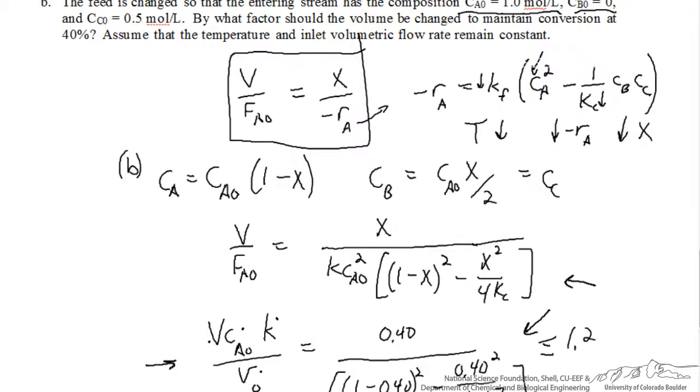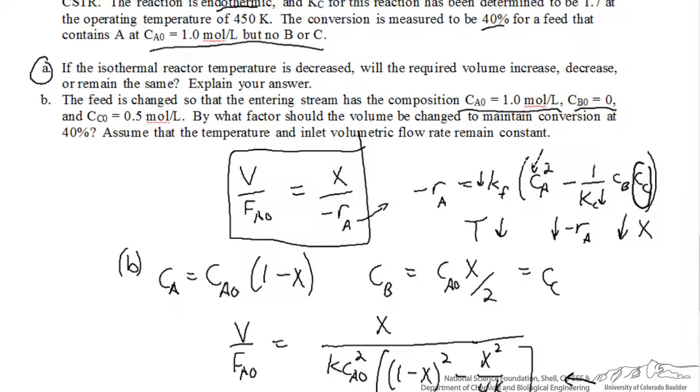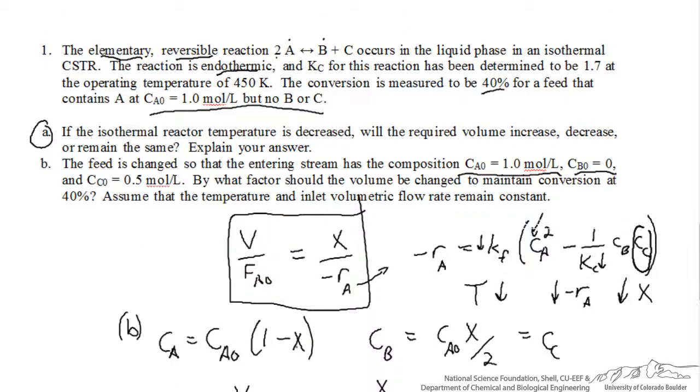We'll need about a 20% larger reactor to still get 40% conversion when we feed some of the products. Again, if we go back to this rate expression, when we feed products, we're increasing that concentration of C. Because there's a negative sign here, that lowers the rate of consumption of A. So we need a larger reactor to carry the reaction out to the same extent. This problem is another example where we are given information about how the reactor is performing initially. We set up material balances and solve for a dimensionless number for that case. That allows us to consider how this change affects the Damköhler number through a ratio of the Damköhler number in the second case compared to the Damköhler number in the first case.